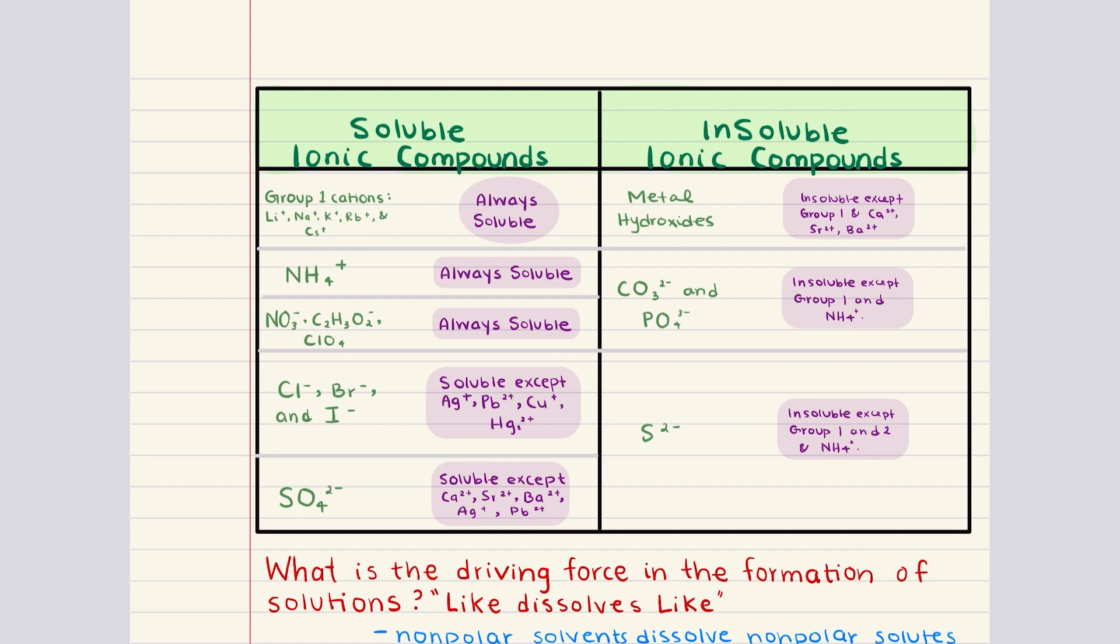This table has two categories. Soluble ionic compounds and insoluble ionic compounds. Let's go over soluble ionic compounds first. Rule number one. Group one cations, lithium, sodium, potassium, so on and so forth, always soluble. Ammonium also always soluble. Anions like nitrate and acetate also are water soluble.